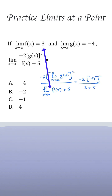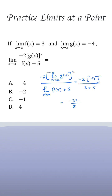And then we simplify. Minus 4 squared is 16, times minus 2, which is minus 32, over 3 plus 5, which is 8. And minus 32 over 8 is minus 4. So choice A is the correct one.